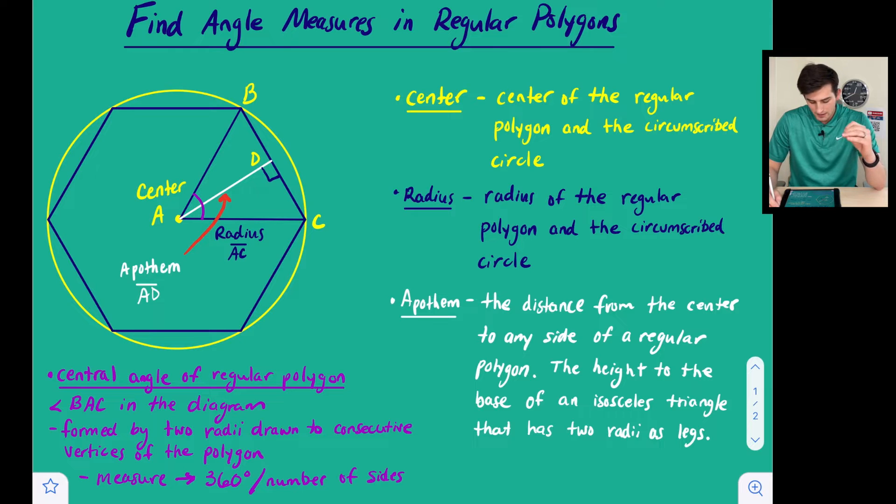We'll start with the center. The center is the center of the regular polygon and it is also the center of the circumscribed circle.